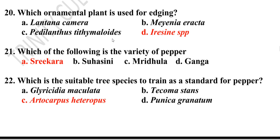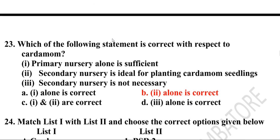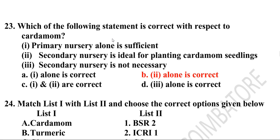Twenty-first question: Which of the following is a variety of pepper? The answer is Sreekara. Twenty-second question: Which is the suitable tree species to train as a standard for pepper? Artocarpus heterophyllus. Twenty-third question regarding cardamom: Secondary nursery is ideal for planting cardamom seedlings. Option B is the correct answer.